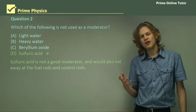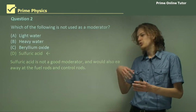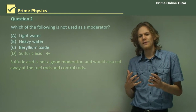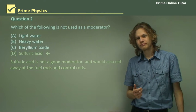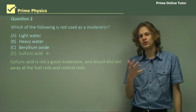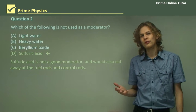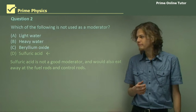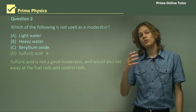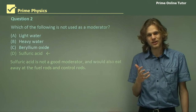One of the reasons sulfuric acid is unsuitable is that it would start to eat away at the fuel rods. You can react things like uranium with sulfuric acid to get uranyl sulfate and so on. So if we used sulfuric acid, not only would it be a bad moderator, but it might damage the reactor itself.